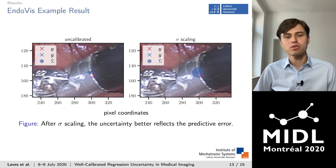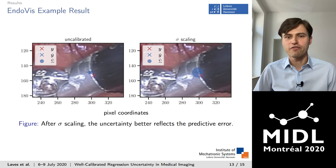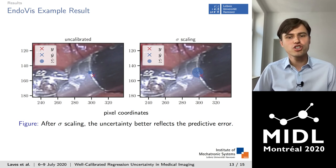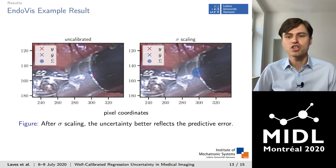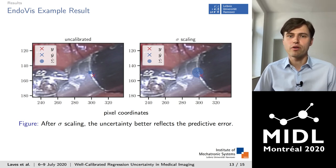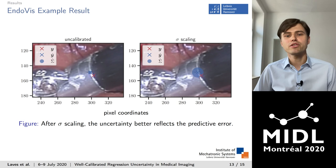A practical example result from the EndoVis test set is shown. The task is to predict pixel coordinates of the forceps shaft center. The ground truth is shown by the red cross and the predicted mean by the blue cross; the shaded region shows the estimated square root of the uncertainty. Before calibration, the uncertainty is underestimated and the true instrument position does not fall into the predictive uncertainty region around ŷ. After calibration with sigma scaling, the uncertainty better reflects the predictive error, allowing more robust detection of tracking failure.